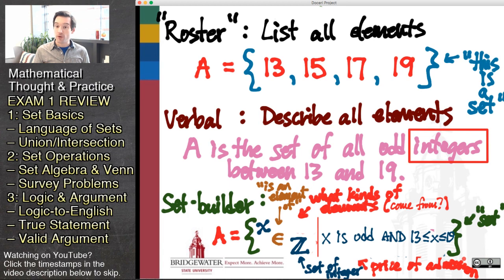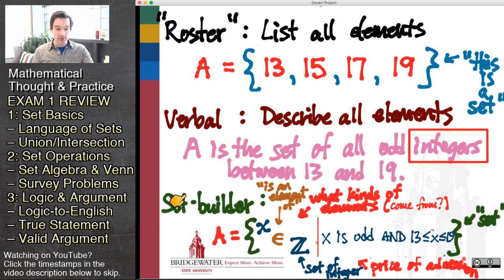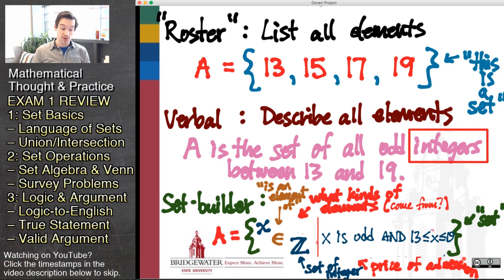Probably the most troublesome form of describing a set is set builder notation. In set builder notation, we use mathematical symbols to make the same kind of description about the membership of a set that we otherwise could have written using words. So the most natural translation is between verbal and set builder methods of describing the membership in a set. I want us to spend some time during our review today just getting practice going back and forth between set builder notation and verbal descriptions for the description of a set.